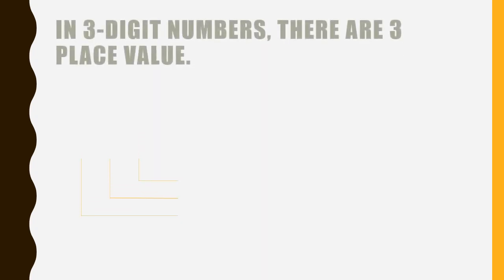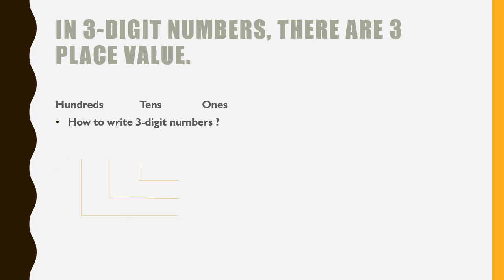In 3-digit numbers, there are 3 place values: Hundreds (H), Tens (T), and Ones (O). I will show you how to write 3-digit numbers. For example, 528: the place value of 8 is Ones, the place value of 2 is Tens, and the place value of 5 is Hundreds.